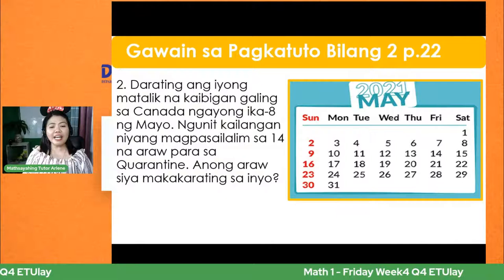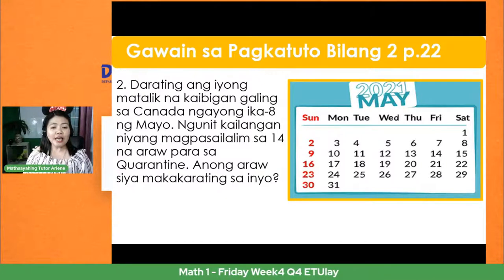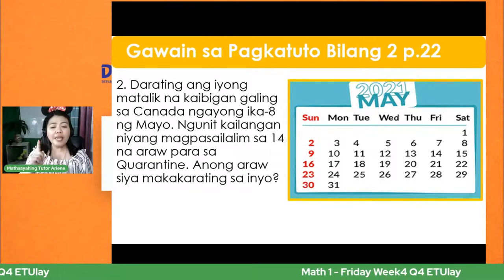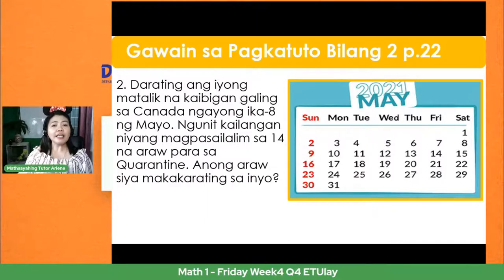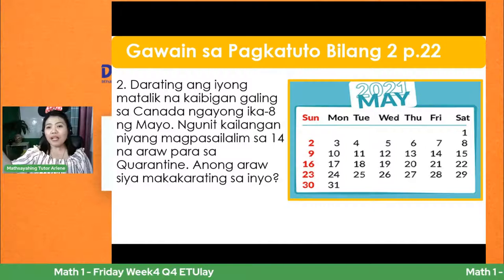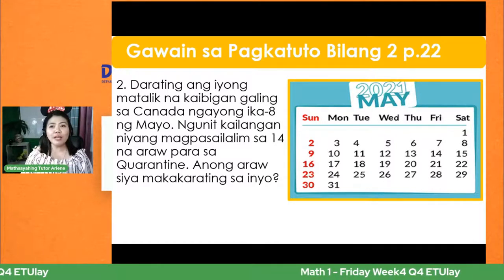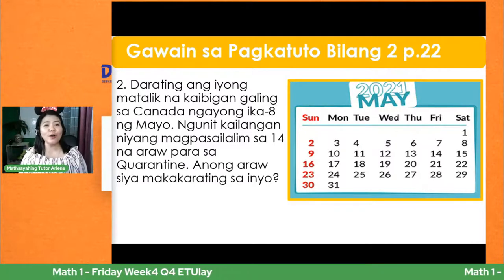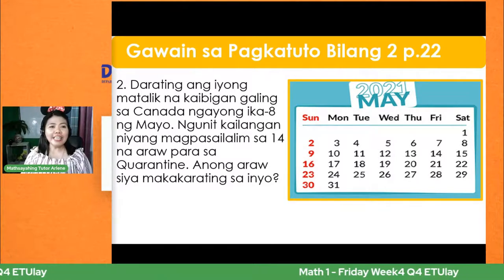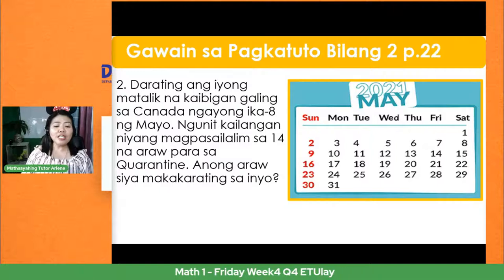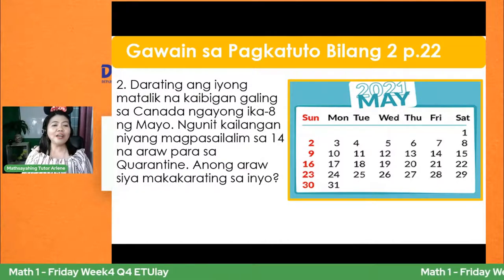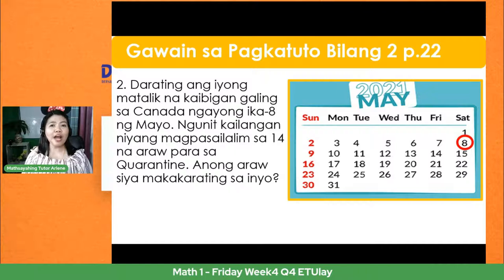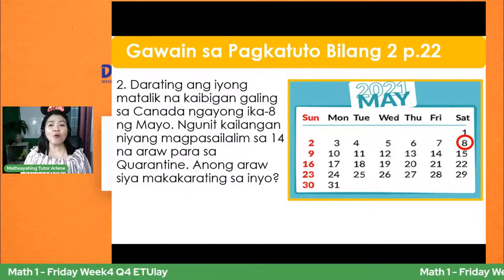Number 2 — darating ang iyong matalik na kaibigan galing sa Canada ngayong ikawalo ng Mayo. Ngunit kailangan niyang magpass sa ilalim sa labing apat na araw para sa quarantine. Pag galing sa ibang bansa, bago umuwi sa kanilang pupuntahan ay iku-quarantine muna sila — ihold muna sila for 14 days. Para matignan kung sila ay positive sa COVID-19. Anong araw siya makakarating sa inyo? Ang kaibigan ay dumating ng ikawalo ng Mayo — May 8.